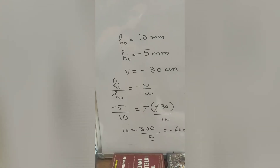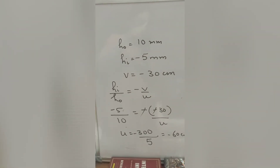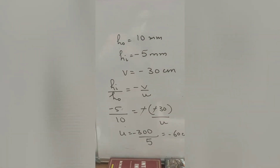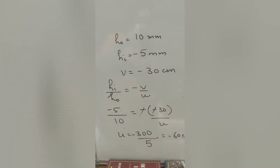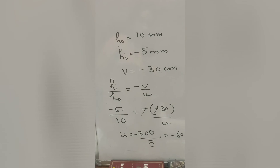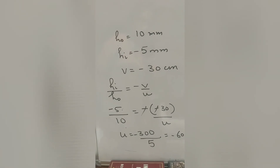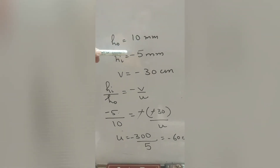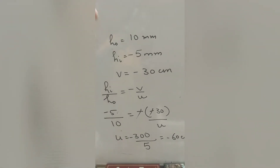Final problem: a 10 mm long pin is placed vertically in front of a concave mirror, and a 5 mm long image is formed at 30 cm in front of the mirror. Calculate the focal length. HO = 10 mm, HI = minus 5 mm (inverted, real image since formed in front of mirror), v = minus 30 cm.